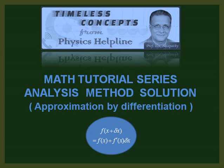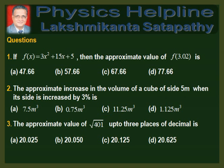The questions are as follows. Question 1: If f(x) is equal to 3x squared plus 15x plus 5, then the approximate value of f(3.02) is? The options are 47.66, 57.66, 67.66, and 77.66.